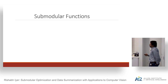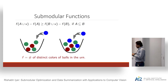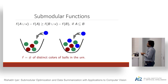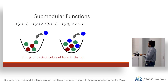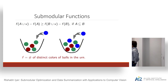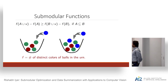In general, set function optimization is very hard, but if we have special structure we can do optimization more easily. One specific structure that occurs naturally for many problems is submodular functions. A function is defined as submodular if the gain of adding an element shrinks as the context of the set grows. Concretely, given two sets A and B, adding element v to A will have a larger gain than adding v to B if A is a subset of B.